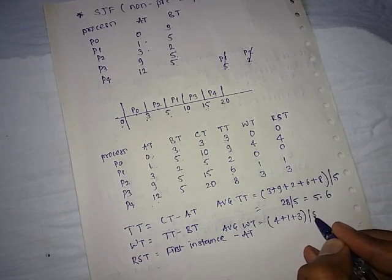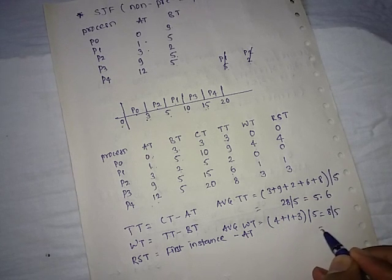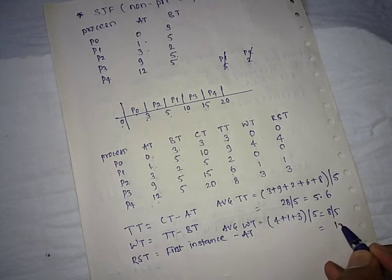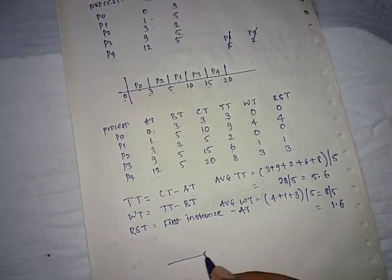Average waiting time is 0 plus 4 plus 0 plus 1 plus 3 divided by 5, that is 1.6 units.